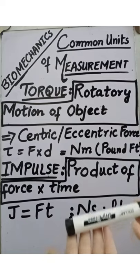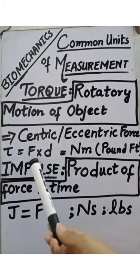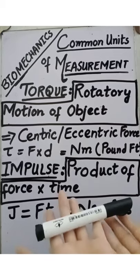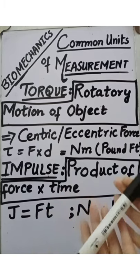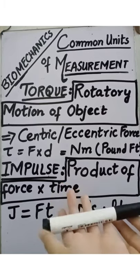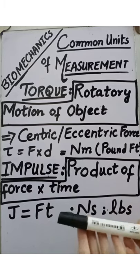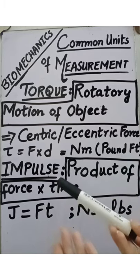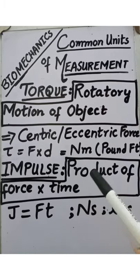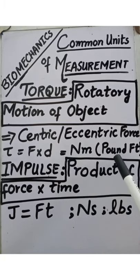Torque is expressed in terms of force multiplied by D, where D is the moment of couple. The moment of couple is the distance from the point where force is applied to the point where the force effect is felt — this distance is what we call the moment of couple. So torque is expressed in terms of force and the moment of couple. The unit of force is Newton and the moment of couple is a distance in meters, so the unit of torque is Newton meter. The English or British unit is pound feet.